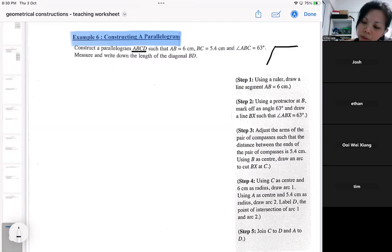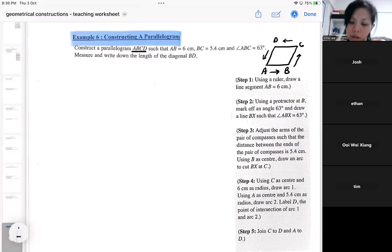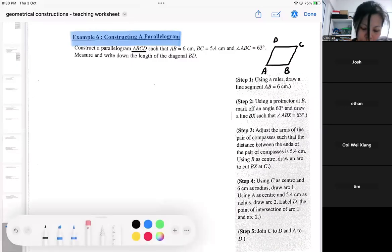So what you can do is you just draw a generic parallelogram. Make sure the alphabets are in circular order. Like this. So you make sure the alphabet is in circular order. And after you make sure that it's in circular order, you just need to roughly put the dimension on it.